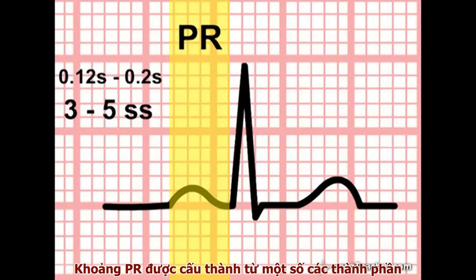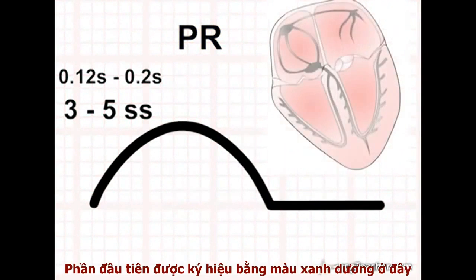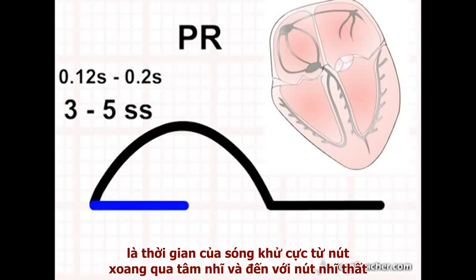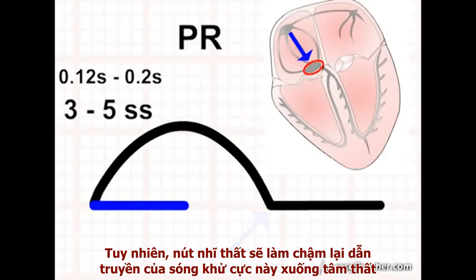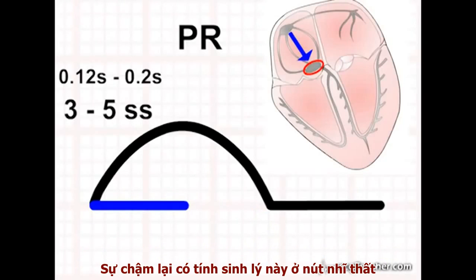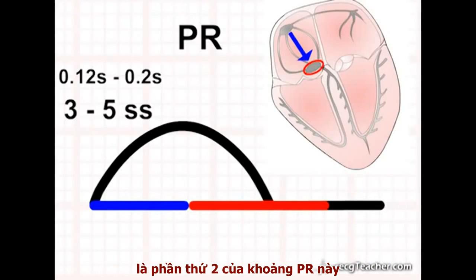The PR interval is made up of a number of elements. The first component is the time taken for the depolarisation wave, normally generated from the SA node, to traverse the atria and reach the AV node. Depolarisation reaches the AV node well before the end of the P wave. However, the AV node delays the transit of the impulse into the ventricles. This physiological delay in the AV node is the second major component of the PR interval.